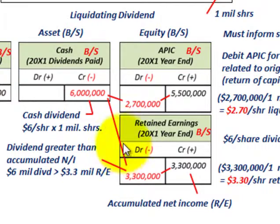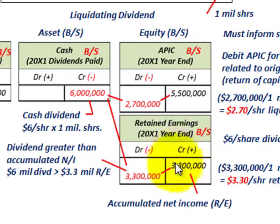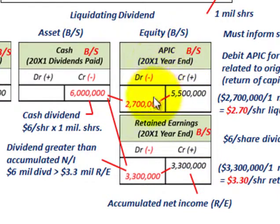The cash dividend of $6 million was paid out to the stockholders, but we only had retained earnings of $3,300,000. What we do is debit out — or remove — the retained earnings of $3,300,000 for the portion of the cash dividend that goes against retained earnings. The remaining amount goes against the additional paid-in capital account.